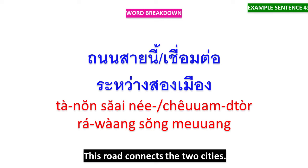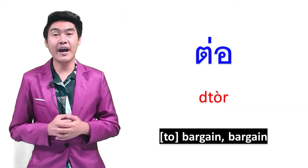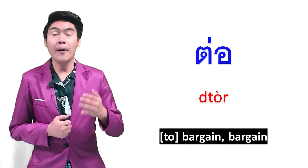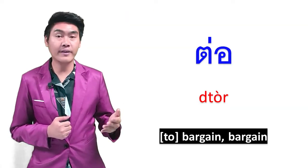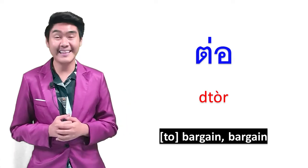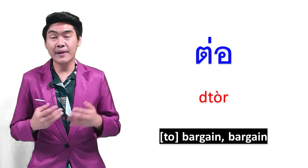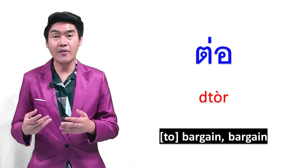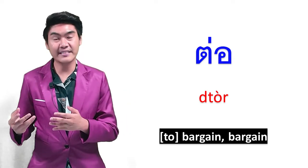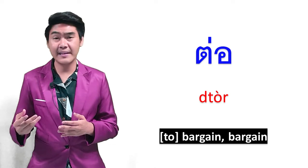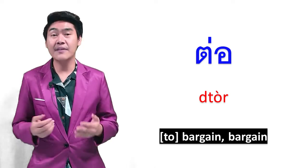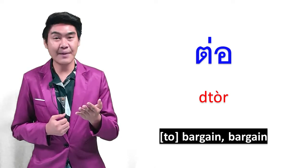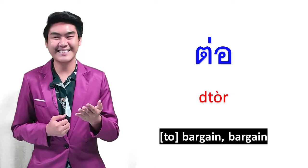Sometimes ต่อ means to bargain in English. You can use ต่อ in this context when you want to buy something at a lower price. You can learn from these example sentences.